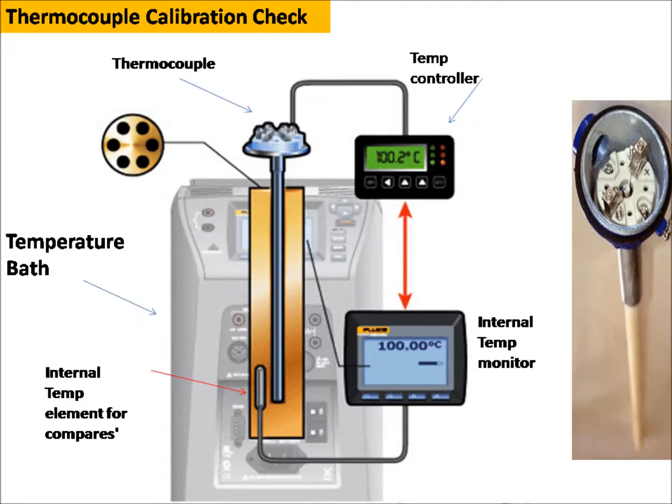Suppose you want to check a thermocouple at 100 degrees Celsius. First, insert the thermocouple inside the bath and set the temperature to 100°C. Wait until the temperature is stable at 100°C. Then set 150°C and check it. This way you can check with 50-degree temperature graduations, and then decrease in the same manner step by step.